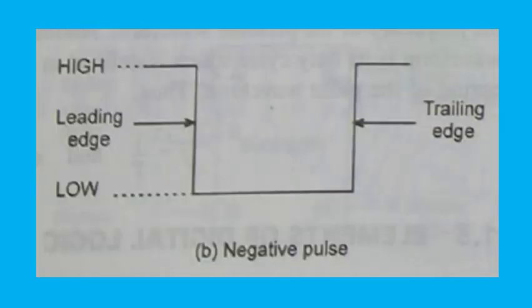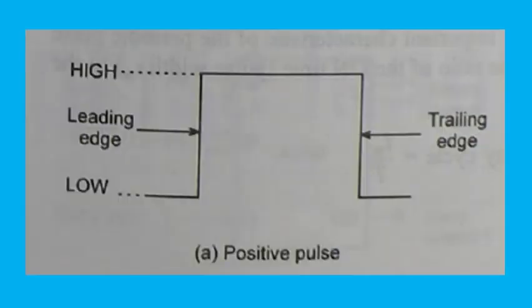As indicated in the figure, the pulse has two edges: a leading edge and a trailing edge. For a positive pulse, the leading edge is a positive-going transition (PGT) or rising edge, and the trailing edge is a negative-going transition (NGT) or falling edge.